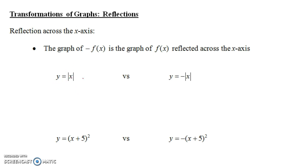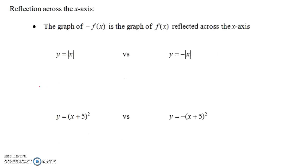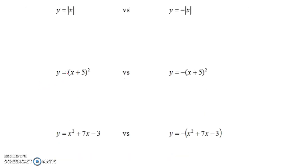So if you have y equals the absolute value of x versus y equals negative the absolute value of x, this will be the same graph only flipped upside down. Same thing with y equals (x+5) squared — that's a parabola, the parabola x² shifted to the left 5. But if we put a negative in front of that, it not only shifts to the left 5, but it also reflects upside down.